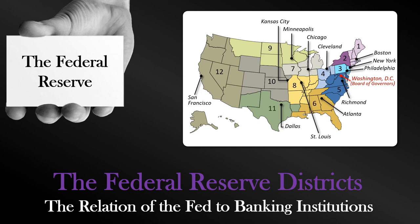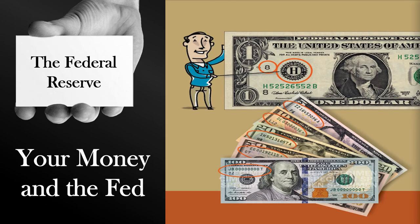The Fed doesn't actually print money, but they are in charge of ordering when money should be printed. The Fed is represented on the dollar bill — their seal will be on the dollar, and each bill has a number and a letter that denotes the Federal Reserve Bank that accounts for that particular bill. For example, a bill with the number eight will have the letter H, the eighth letter in the alphabet, meaning it appears on the balance sheet of the Federal Reserve Bank of St. Louis, the eighth district bank.